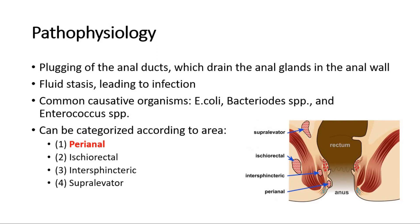Anorectal abscesses can be categorized by the area in which they occur: Perianal, which is the most common area; Ischiorectal; Intersphincteric; and Supraelevator.